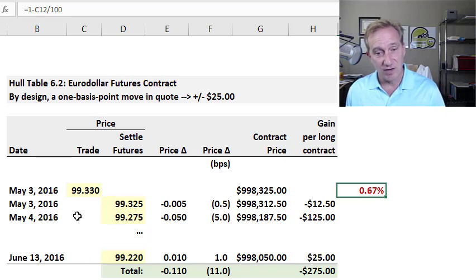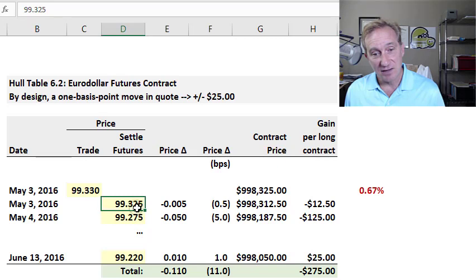This is a short-term trade that Hull has illustrated. He only goes from May to June, and he's got imagined here fluctuating futures prices. The futures price will fluctuate over time due to many variables.